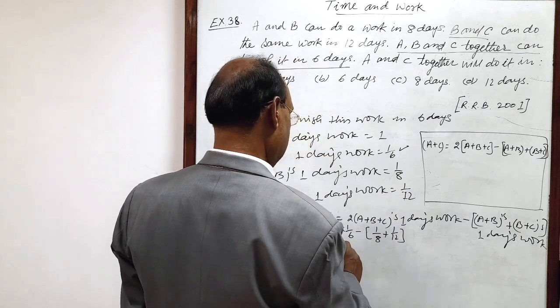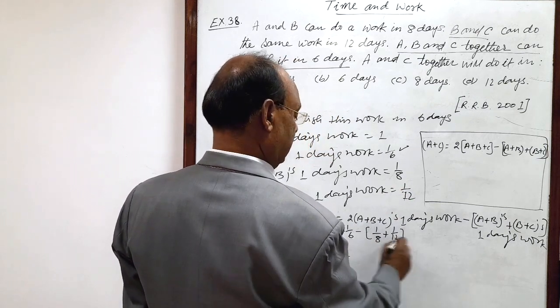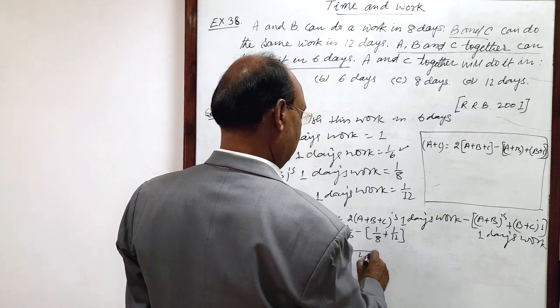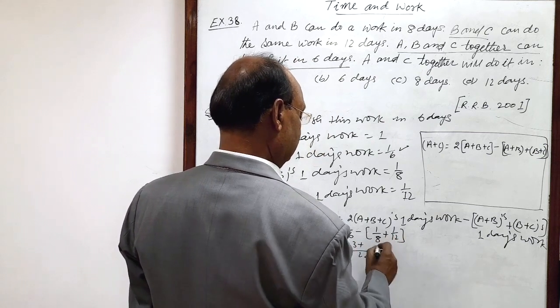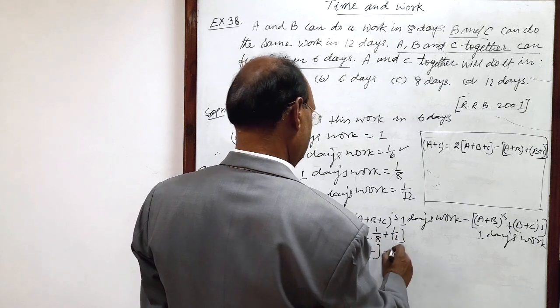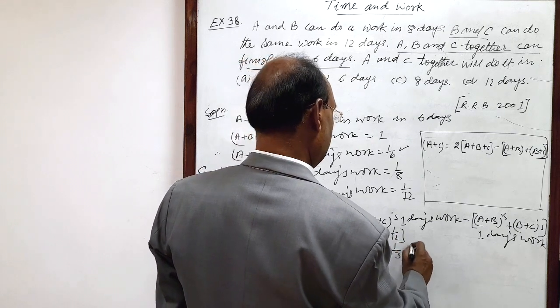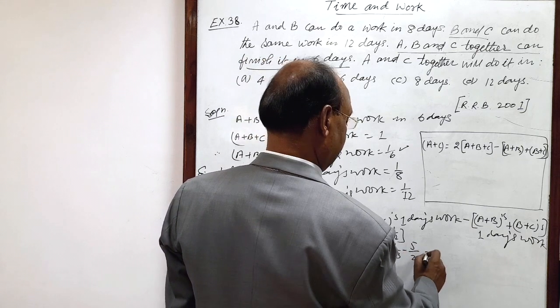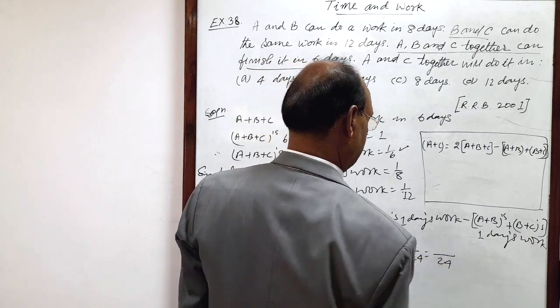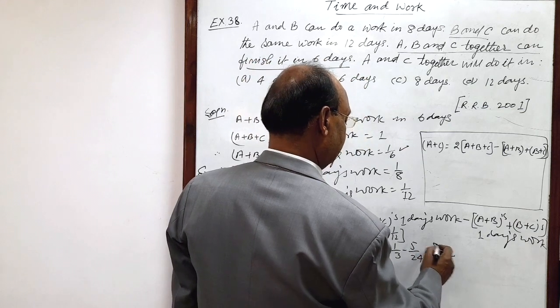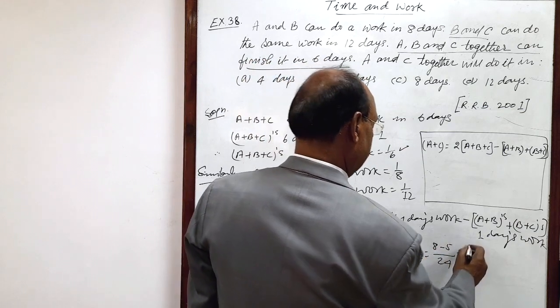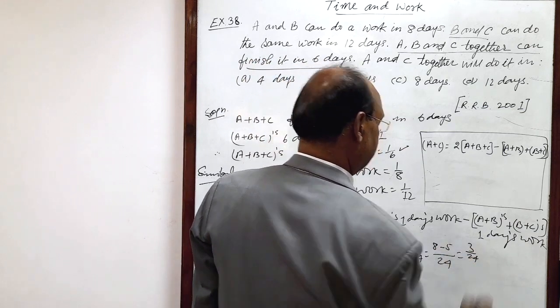This is 1 by 3 minus, here LCM is 24. So 3 times 8 is 24 and 2 times 12 is 24. So this is 1 by 3 minus 5 by 24. Here LCM is 24, 8 times 3 is 24 minus 5.